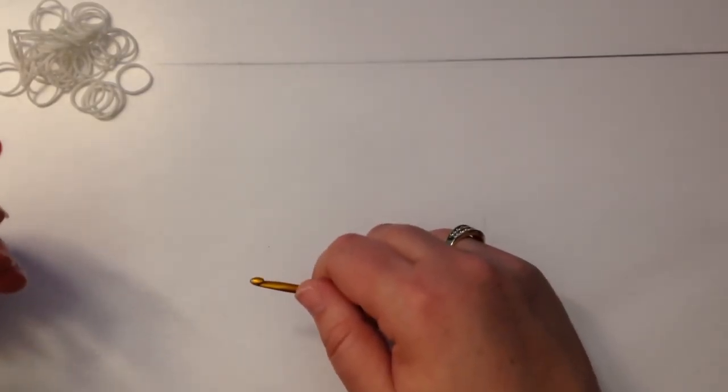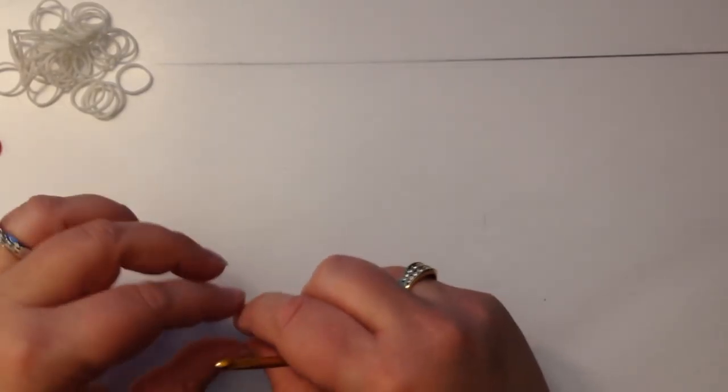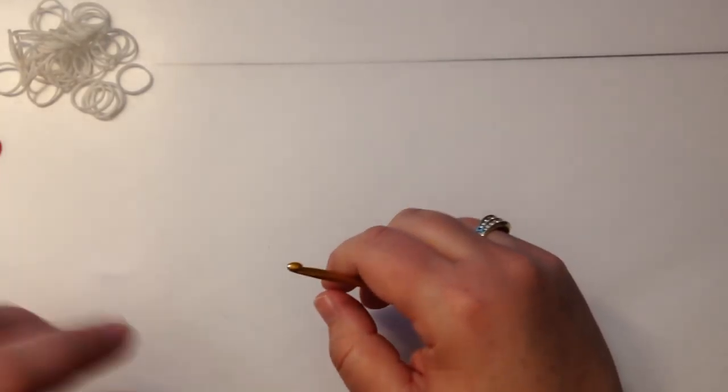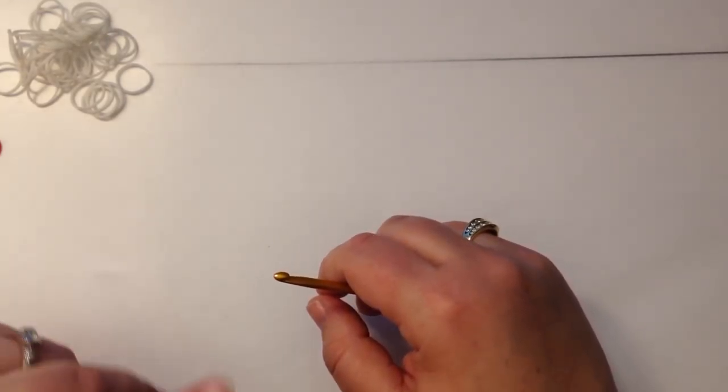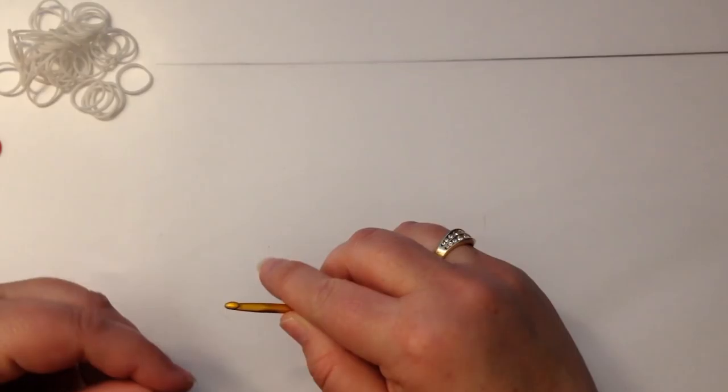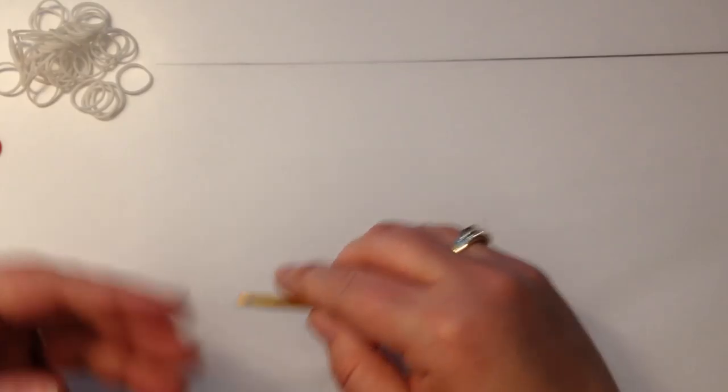So the first thing we need to do is when they say you start from a chain. Now, I've already got a video on how to do a magic ring made easy, but sometimes you need to start a chain.